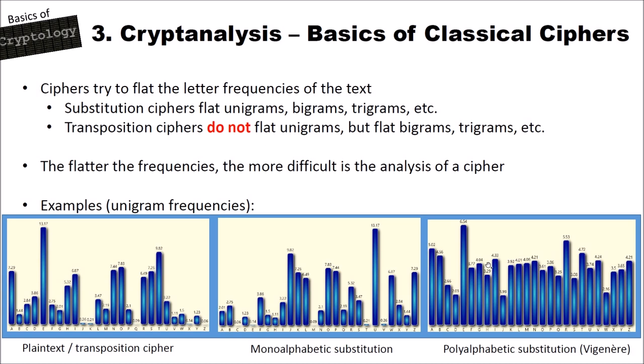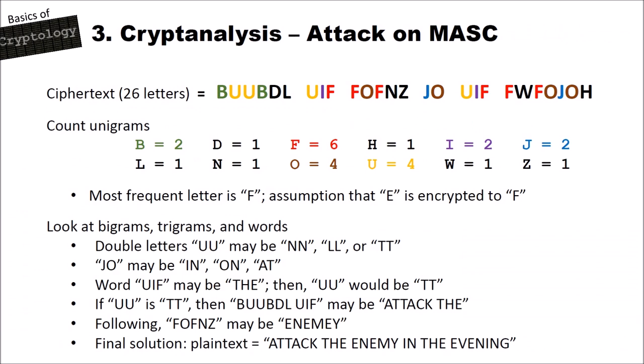Let's attack some real-world ciphers. To break a monoalphabetic substitution cipher, we start with a ciphertext of 26 letters: B, U, U, B, D, L, U, I, and so on. The first step is to count the unigrams. We see that F is the most frequent letter, while L, D, N, and others are less frequent. Based on the fact that F is the most frequent letter, we can assume that F is the encrypted E. After counting the letters, we look at bigrams, trigrams, and words.